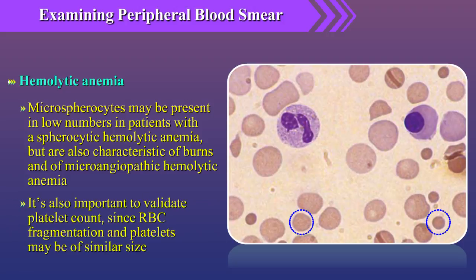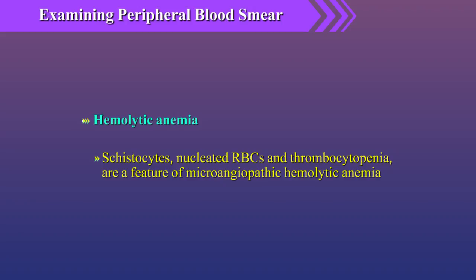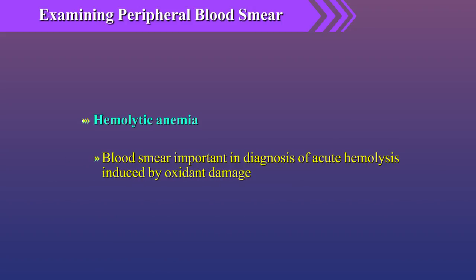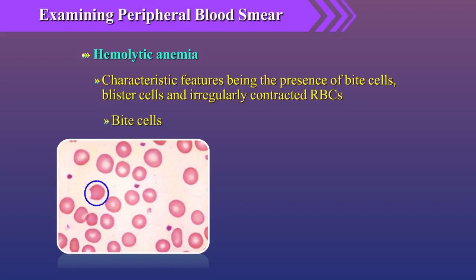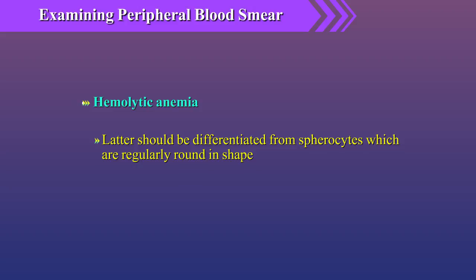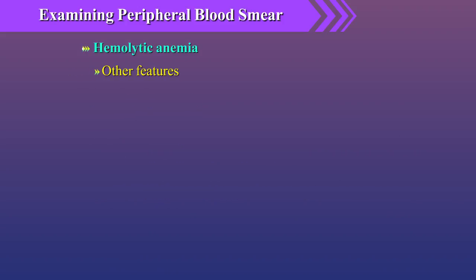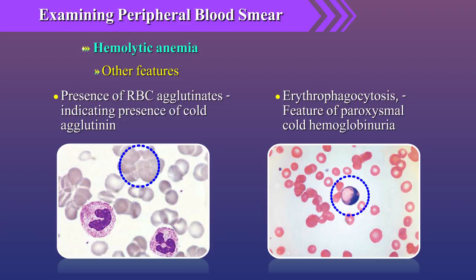In microangiopathic hemolytic anemia, it is important to validate platelet count since RBC fragments and platelets may be of similar size. Schistocytes, usually with nucleated red blood cells and thrombocytopenia, are a feature of microangiopathic hemolytic anemia. Blood smear is particularly important in diagnosis of acute hemolysis induced by oxidant damage, with characteristic features being bite cells, blister cells, and irregularly contracted red blood cells, which should be differentiated from spherocytes. Other features aiding differential diagnosis include RBC agglutinates indicating cold agglutinin and erythrophagocytosis, often a feature of paroxysmal cold hemoglobinuria.